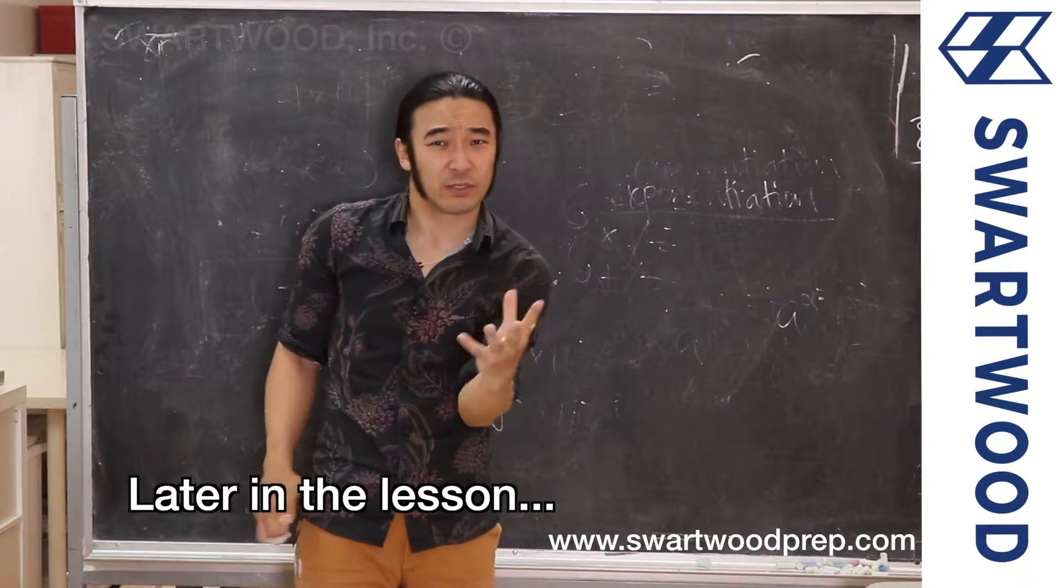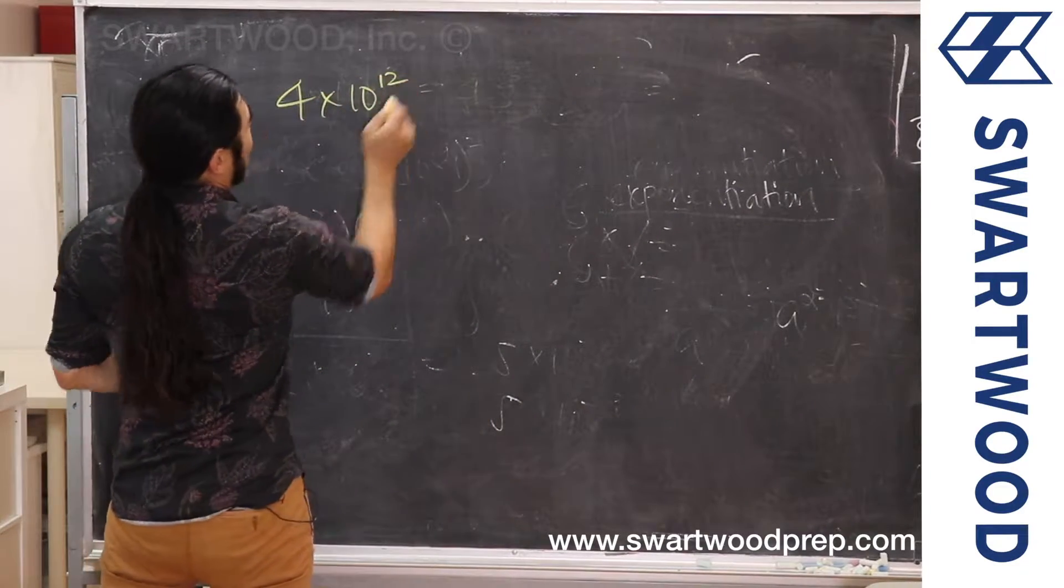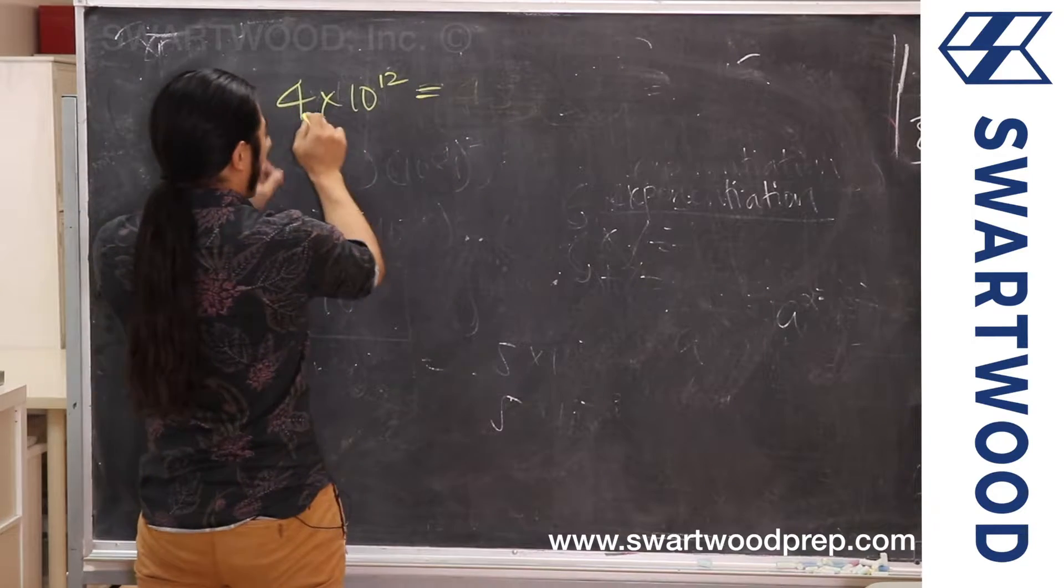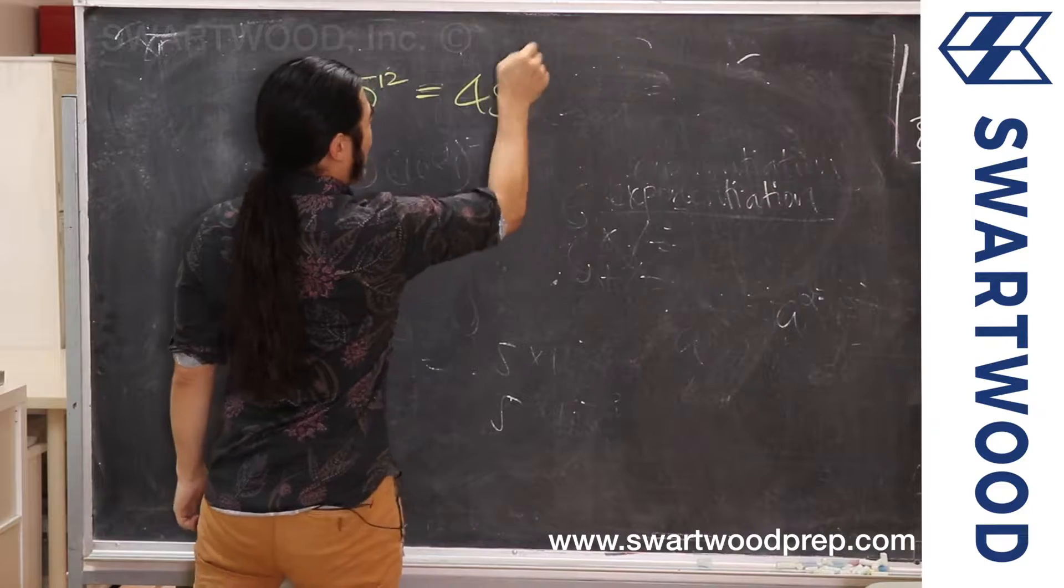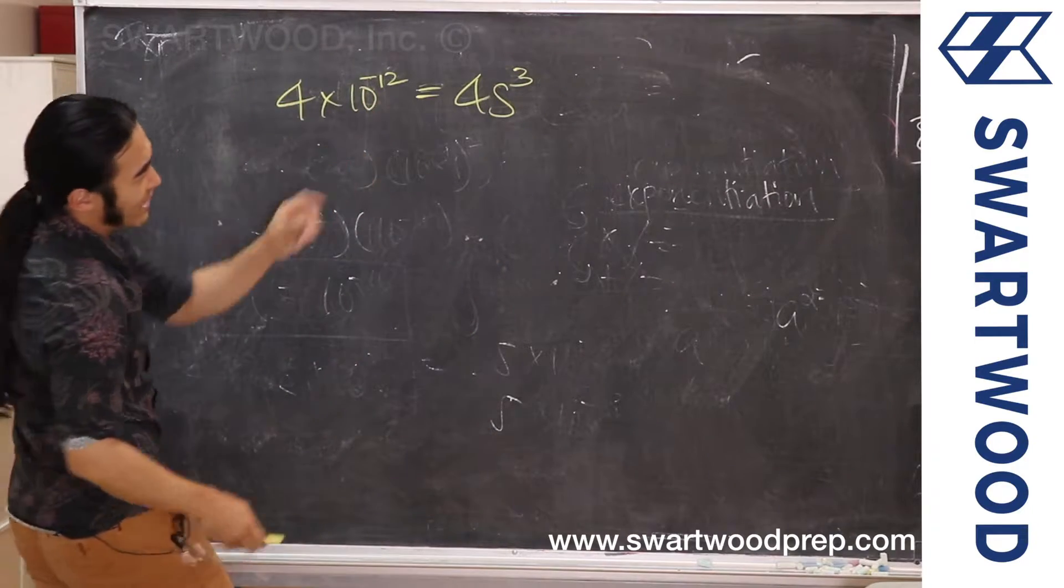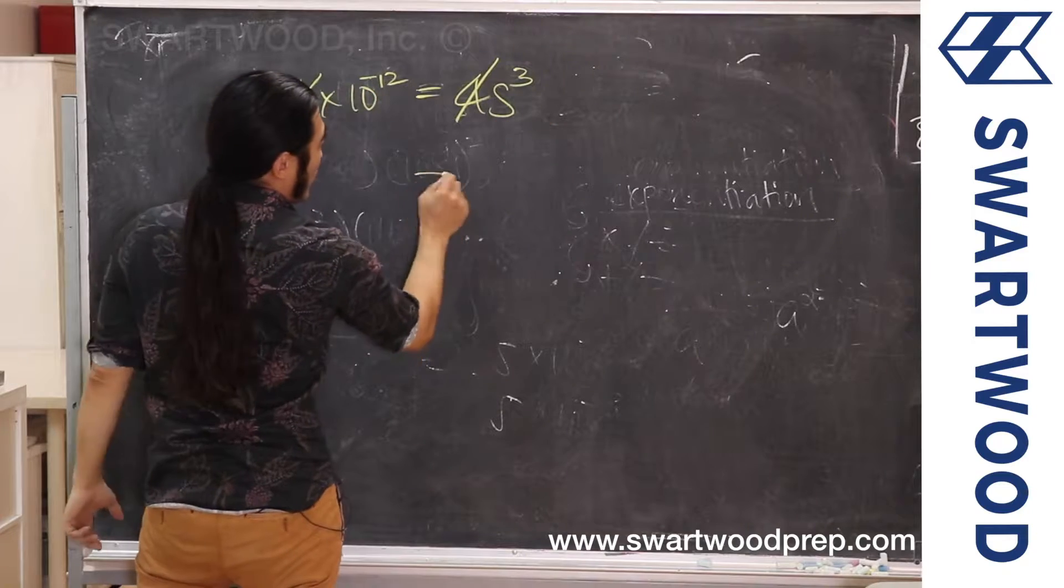Another case where you can see this sort of thing is when we talk about solubility. And for those of you that are in class, we saw this for Ksp, that solubility thing. Let's say we have 4 times 10⁻¹² and over here we have 4s³. If I want to solve for s, we can literally divide by 4, and then we need to take the cube root.